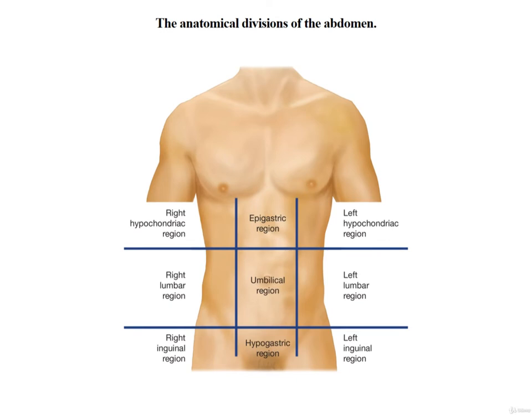In the middle row, the right and left regions are the right and left lumbar regions, and the middle region is the umbilical region. The navel or umbilicus is in the umbilical region, and the lumbar regions are in line with the lumbar vertebrae of the back. In the bottom row, the right and left regions are the right and left inguinal regions, and the middle region is the hypogastric region.